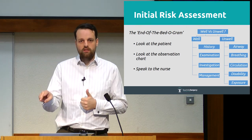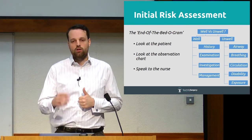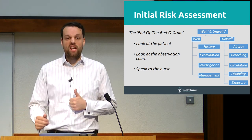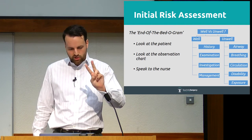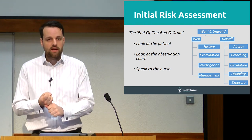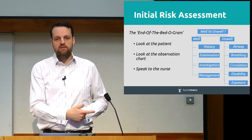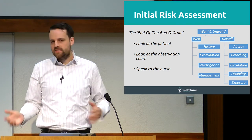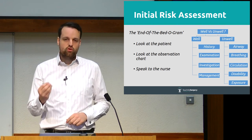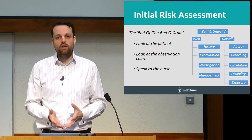Number one: look at the patient. Are they comfortable and well, or are they writhing around the bed in pain, or are they unconscious? Are they as pale as the bed sheets or are they as yellow as it gets? Number two: look at the observation chart. Are they in shock with hypotension and tachycardia? Is there a deteriorating trend in the observations, or are they scoring on their early warning score? These physiological scores — like the early warning score and the national early warning score — are useful triggers, but you need to take into account the whole clinical situation.